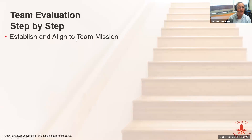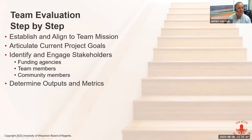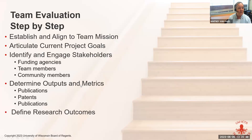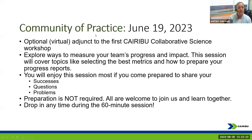To sum up what we've talked about today: establishing and aligning to your team mission, articulating your current project goals, identifying and engaging your stakeholders — including team members, funding agencies, and community members — determining the outputs and metrics most useful for measuring team process and impact, and defining your outcomes. We do have a Community of Practice coming up on June 19th — an hour-long session where we'll cover case studies and additional information.